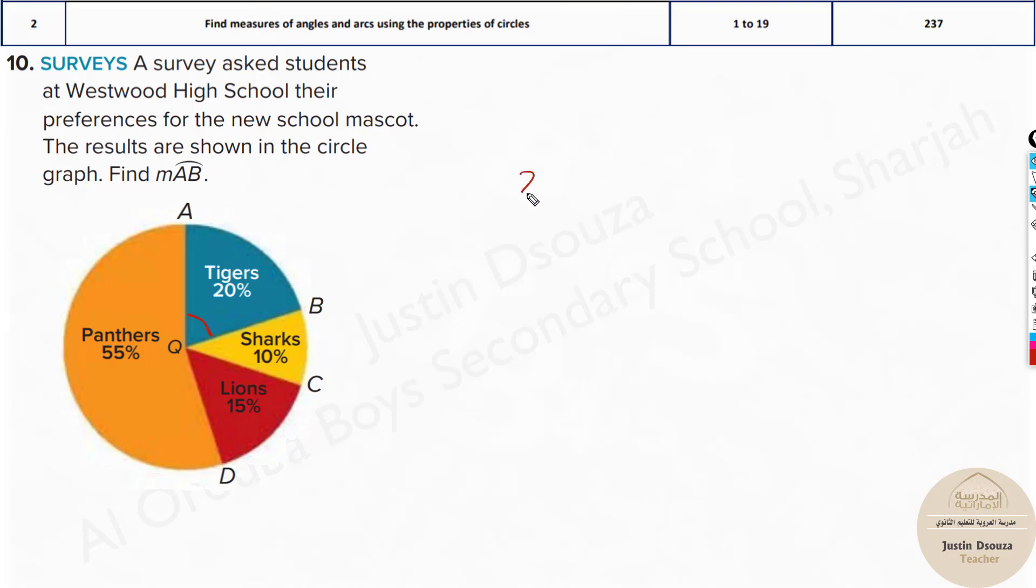20% of a circle. What is the total degrees of a circle? It's 360. Just do this, you will get the answer. So here 20% would be divided by 100. Just use a calculator. It's 2 times 36, that'll be 72. 72 degrees is the answer.